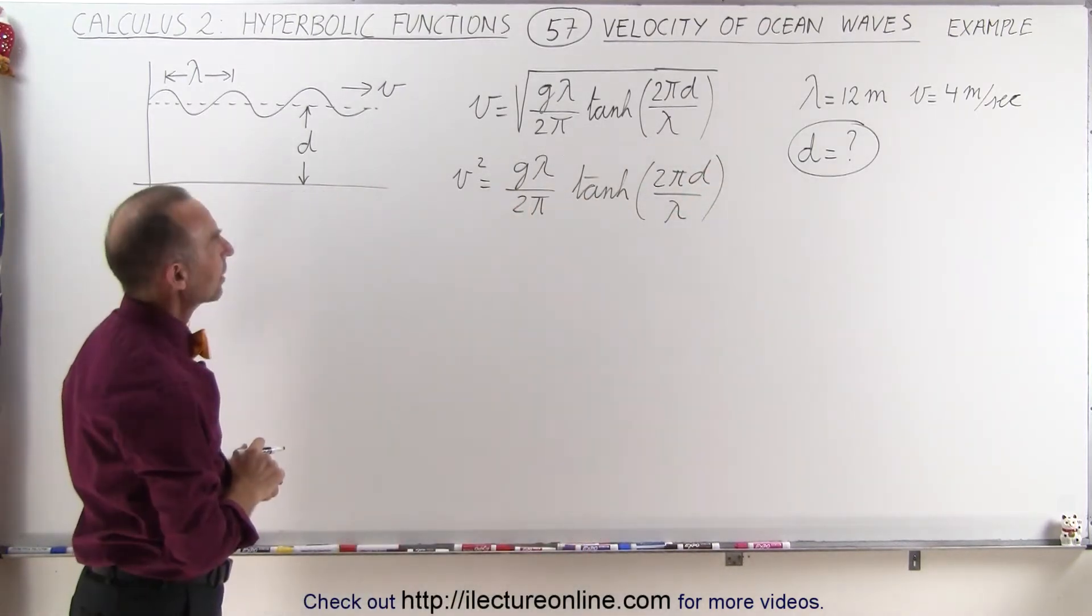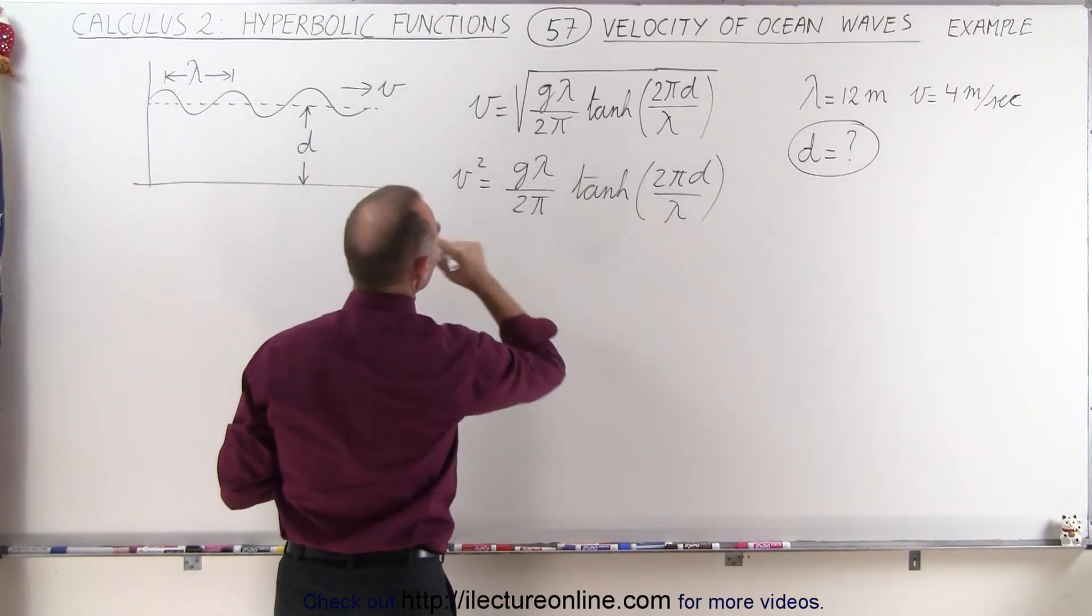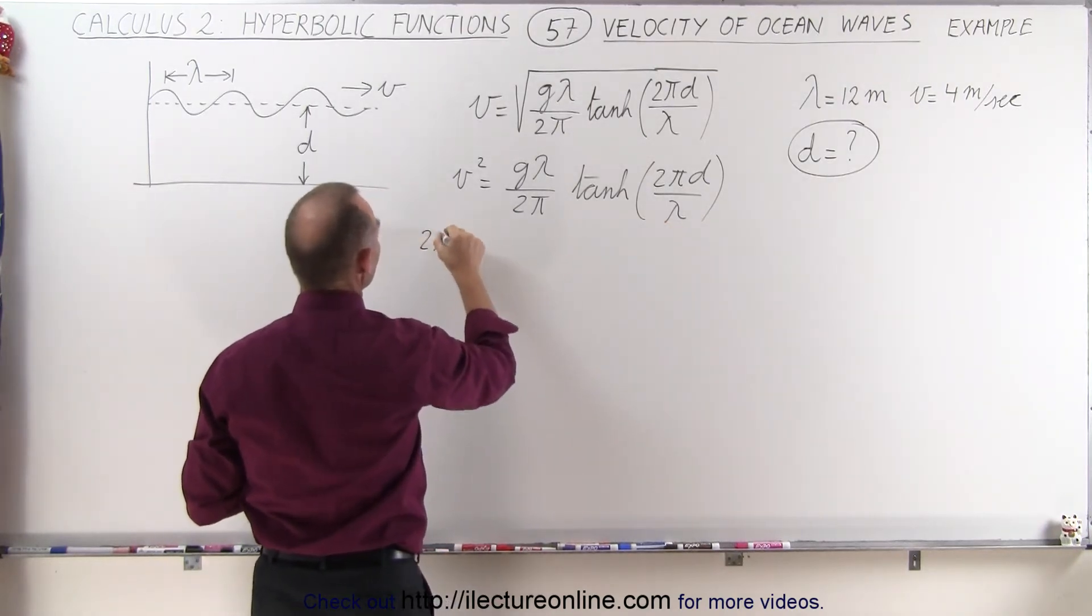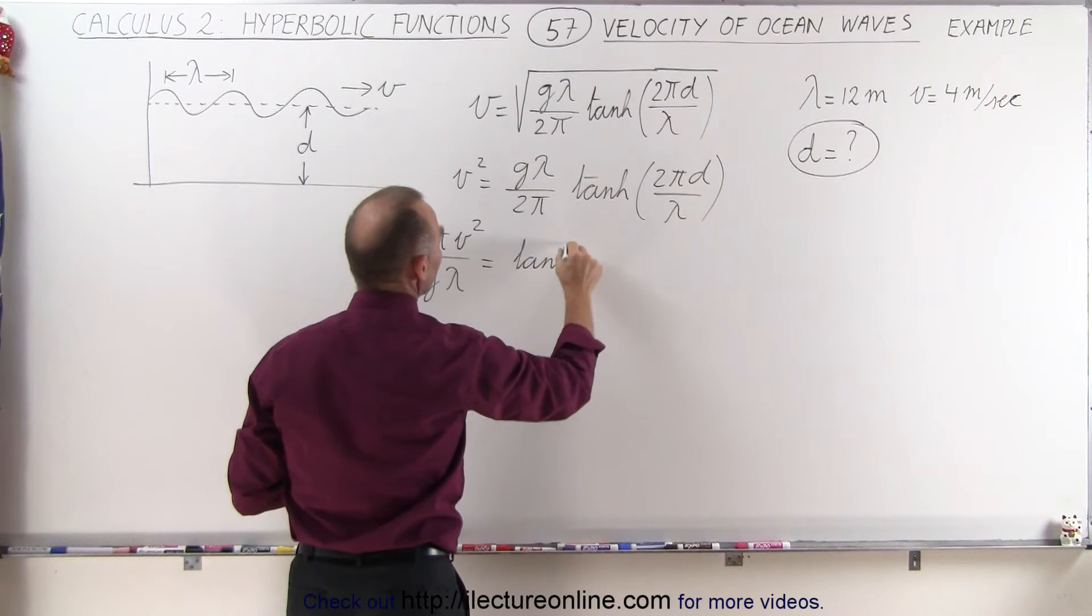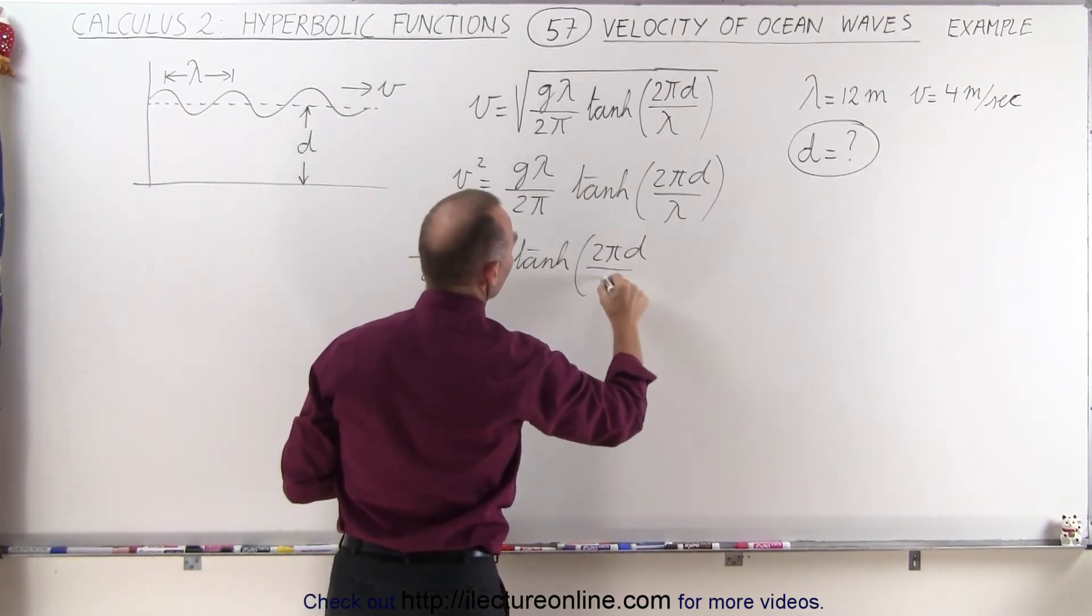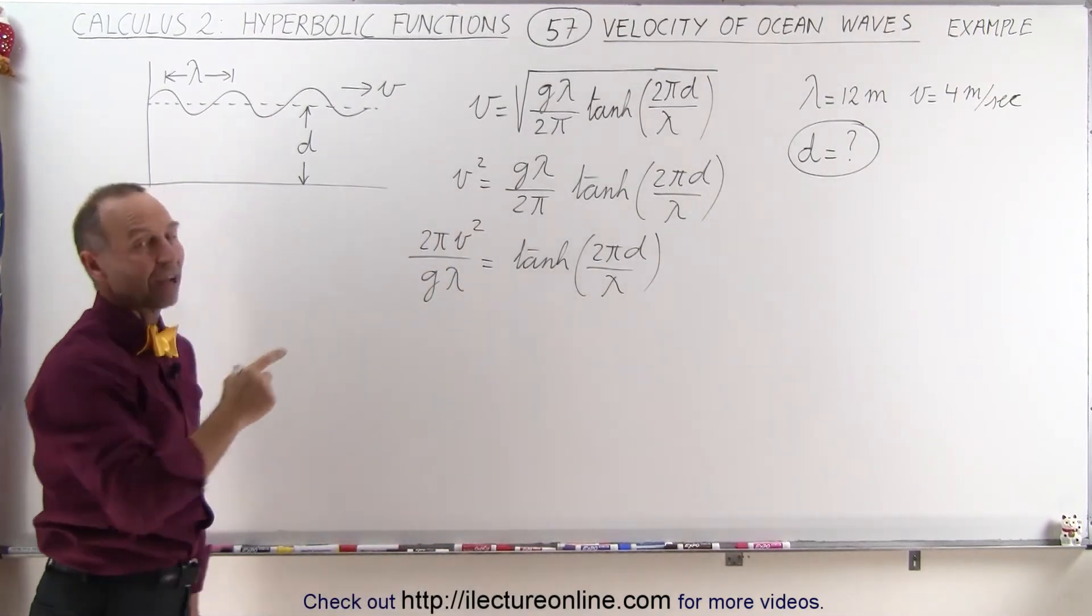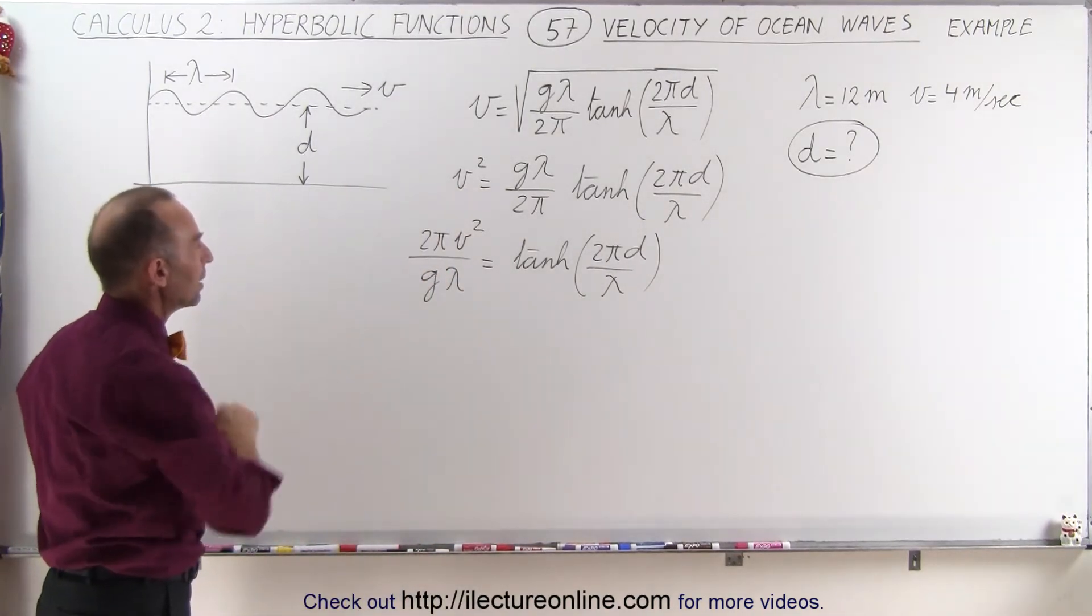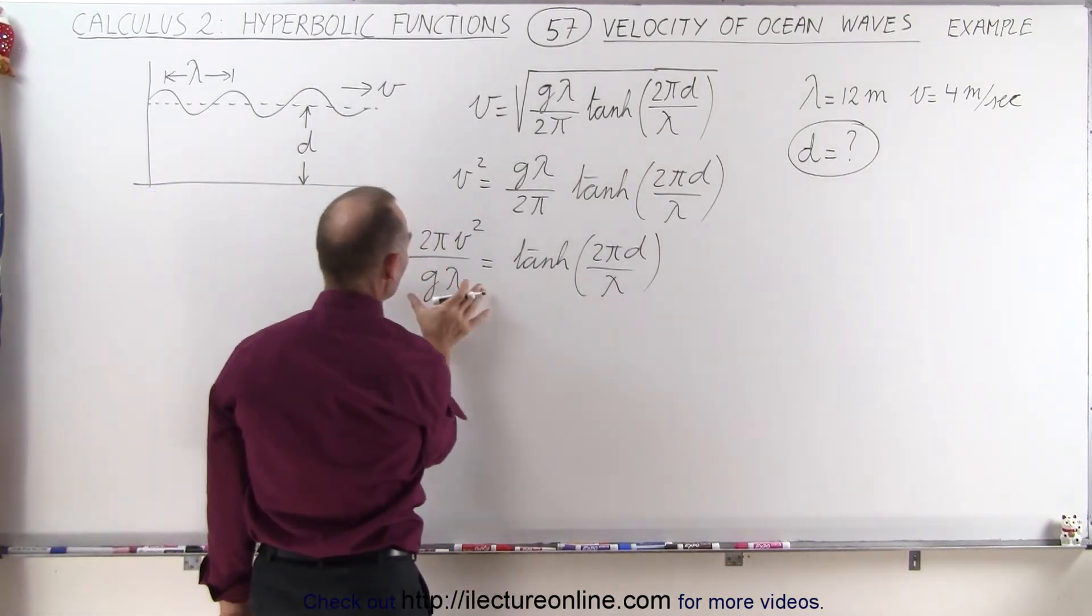Next, what we can do is separate these because we want to isolate this here. So we can write that 2π times v squared divided by g times lambda is equal to the hyperbolic tangent of 2πd divided by lambda. Now what we can say is that the inverse hyperbolic tangent should be equal to that quantity.